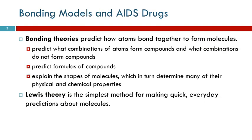Bonding theories predict how atoms bond together to form molecules. We've been talking about molecules, but we haven't really talked about why they form or how — we just said they're atoms that are stuck together. Now we're going to find out how they're stuck together. These bonding theories help us to predict what combinations of atoms will form compounds and which ones will not, help us to predict the formulas of compounds, and explain the shapes of molecules. The shapes of molecules are actually quite important in understanding their properties and chemical characteristics. There are different bonding theories. The Lewis theory is the simplest one — it's the easiest to understand, and it's really good for making quick, everyday sorts of predictions. So that's what we're going to start with.